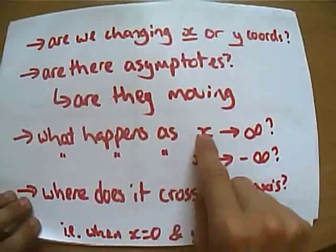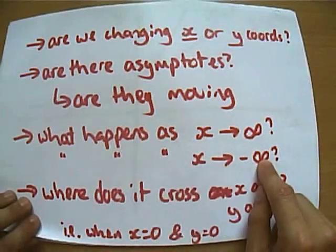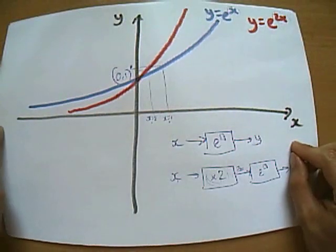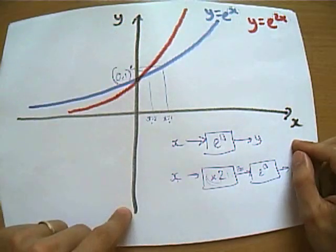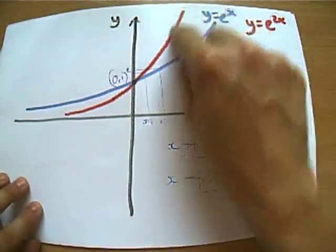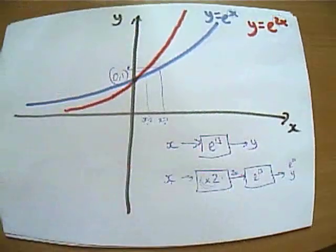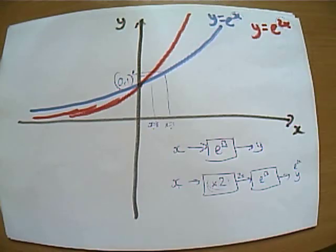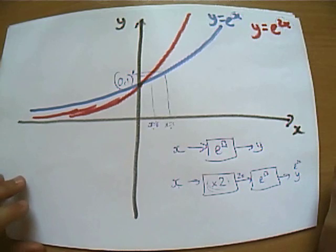Have we thought about what happens as x tends towards infinity and negative infinity? Yes, we've just talked about that. Where does it cross the x-axis or the y-axis? We've just said it never actually crosses the x-axis and it still crosses the y-axis at 0, 1. So I'm pretty confident that this red curve here is indeed a good sketch of y equals e to the 2x.